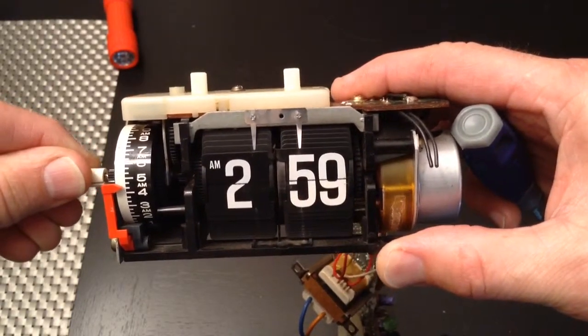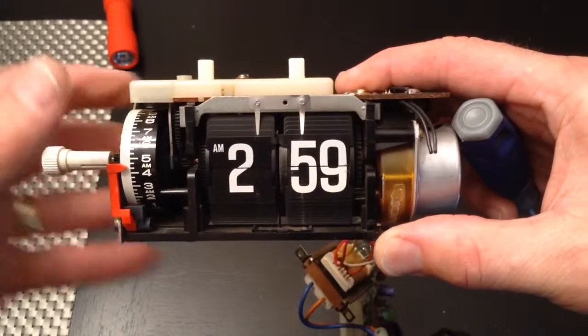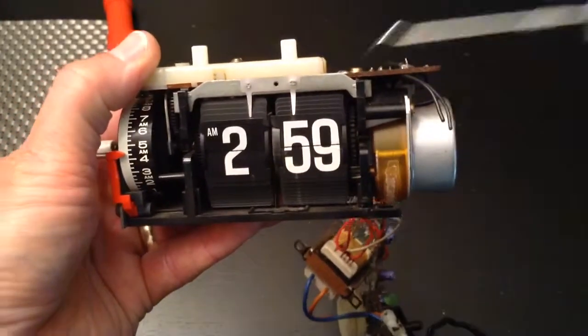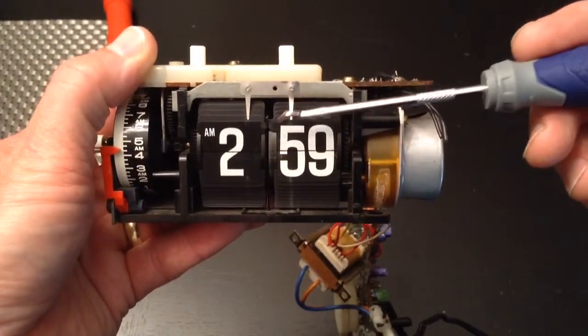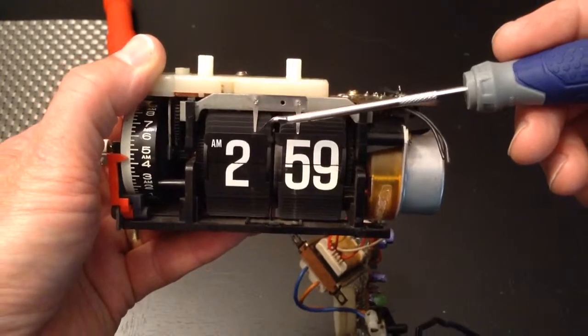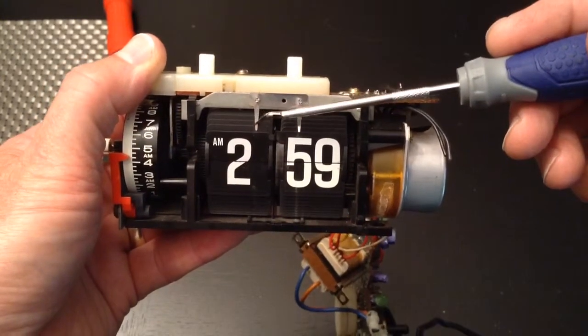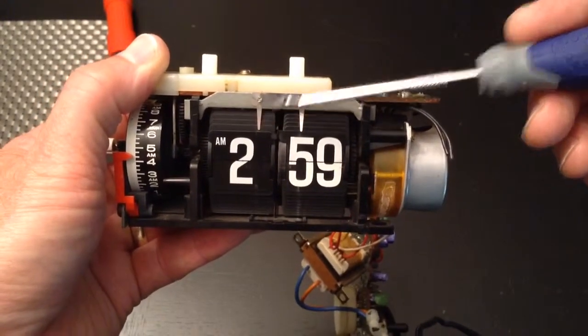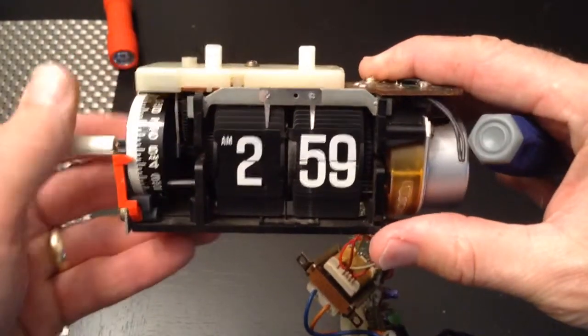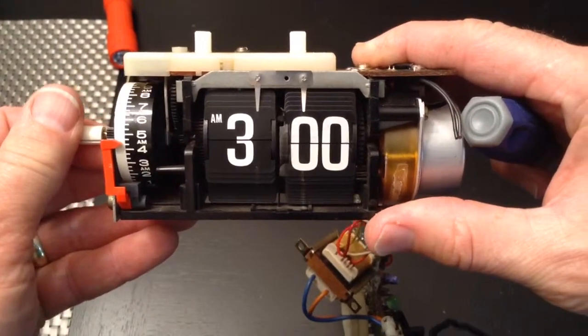And all that's left is that tab on 59 holding that piece of metal in, as you can see right here. That's the only thing holding that piece of metal in. This tab has already dropped from this metal tine here, which is holding back the three. So when the 59 drops, the two drops to the three. And that's how it works.